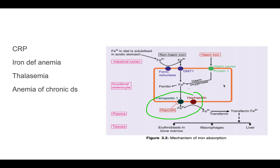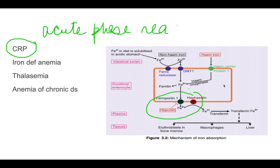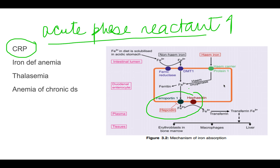Related questions can also come, so remember: hepcidin is a type of acute phase reactant, like CRP. That means in a body where chronic inflammation is ongoing, you can see an increase in hepcidin. In the case of anemia of chronic disorder, hepcidin will increase.